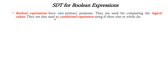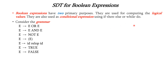Boolean expressions have two primary purposes. First, they are used for computing logical values, and second, they are used as conditional expressions in if-then-else or while-do statements. Consider this grammar as an example. We have productions related to OR operation, AND operation, NOT operation, assignment operation, relational expressions, and Boolean operators like true and false.